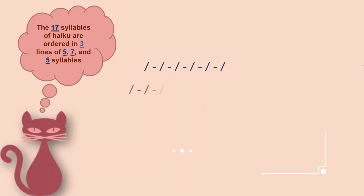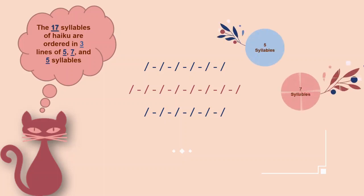A haiku has three lines: the first line has five syllables, the second line has seven syllables, and the third line has five syllables — totaling 17 syllables. That was my explanation of Ezra Pound's 'In a Station of the Metro,' imagism, and haiku. I hope you enjoyed this video and I can see you in the next ones.